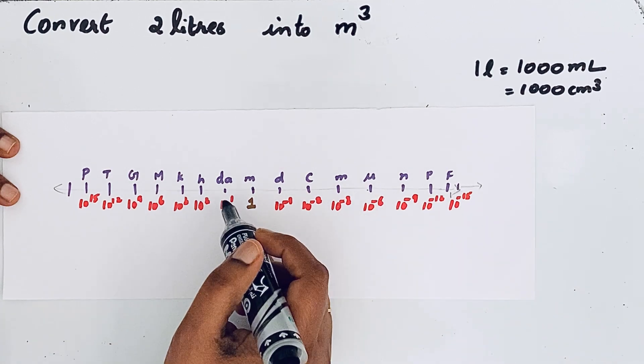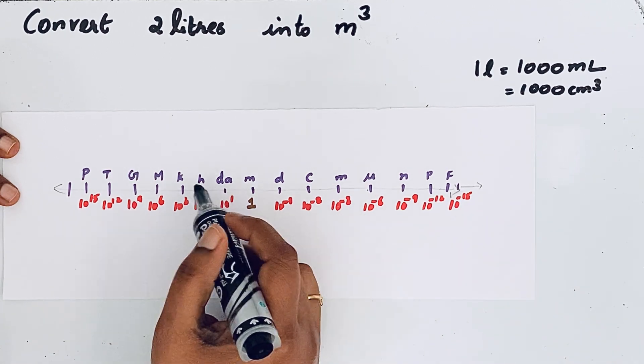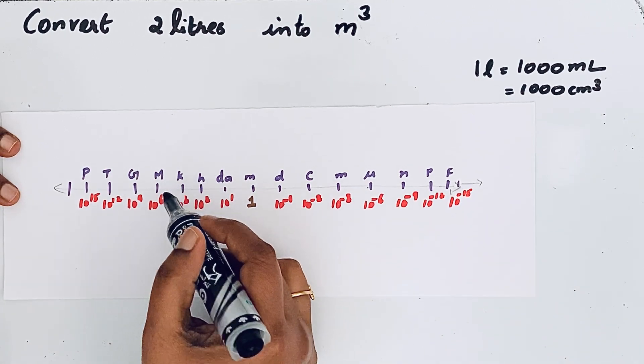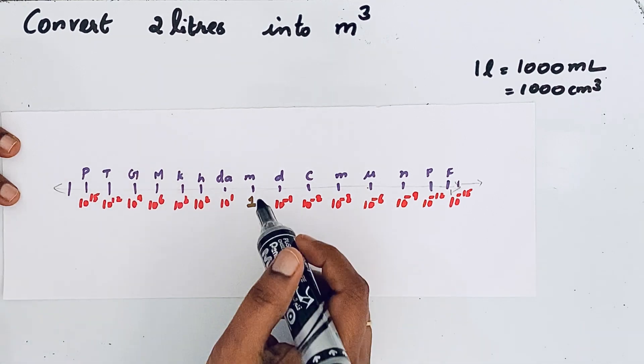On the left side: deca, hecto, kilo, mega, giga, tera, and beta.